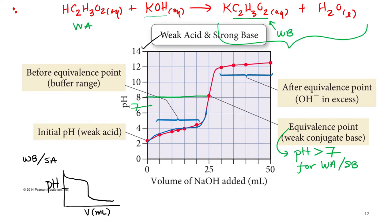So if this is 7, the equivalence point will be... The pH at the equivalence point will be less than 7 for the weak base strong acid titration.